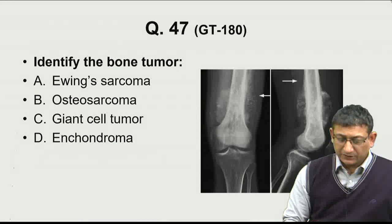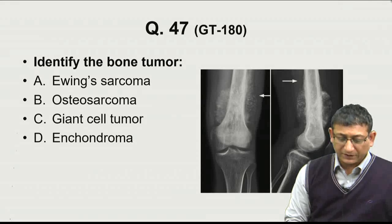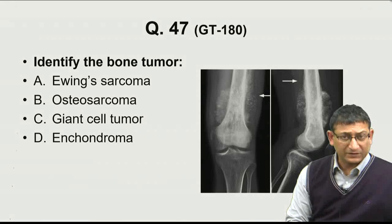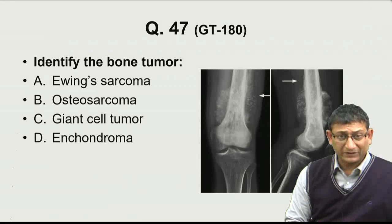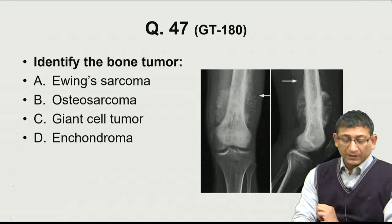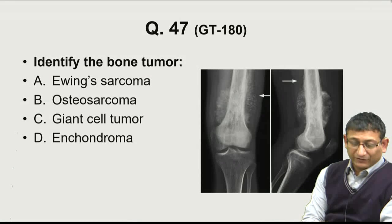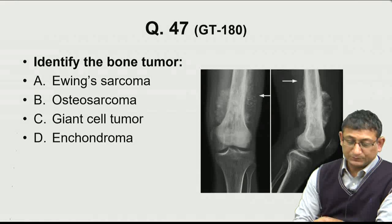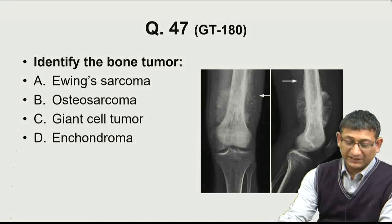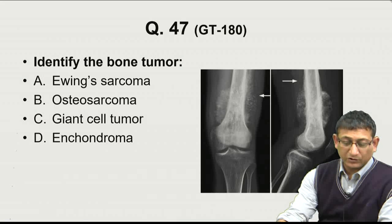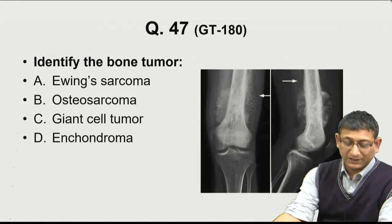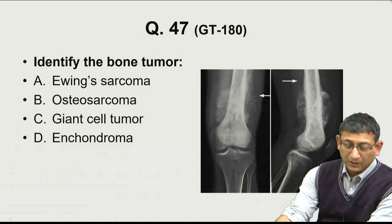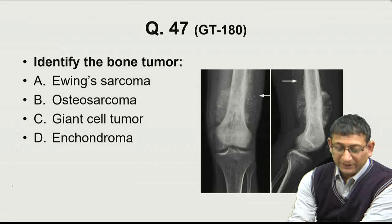Starting with question number 47, this seems to be a pretty simple question. Identify the bone tumors. The choices are Ewing sarcoma, osteosarcoma, giant cell tumor, and enchondroma.